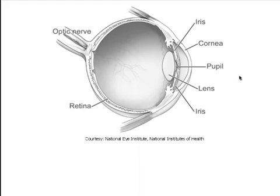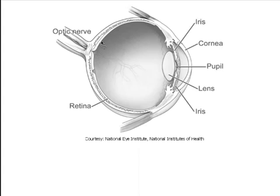When light enters the eye, it passes through the cornea, which is made up of proteins, and it passes through the pupil — that's the dark part at the center of your eye — and the light passes all the way through until it strikes the retina, which is along the back surface of the eye, where the rods and the cones are.